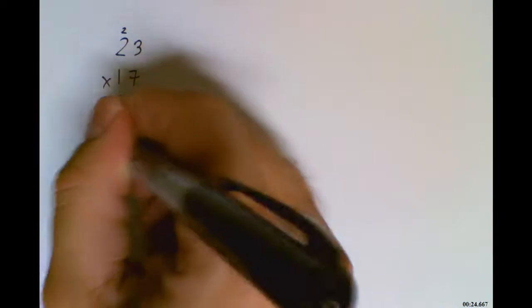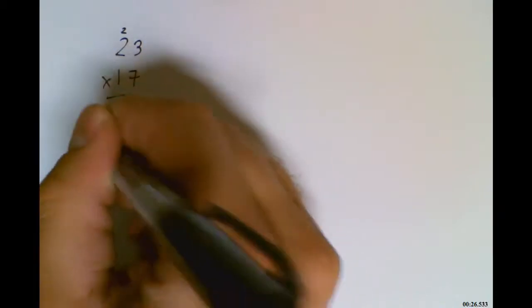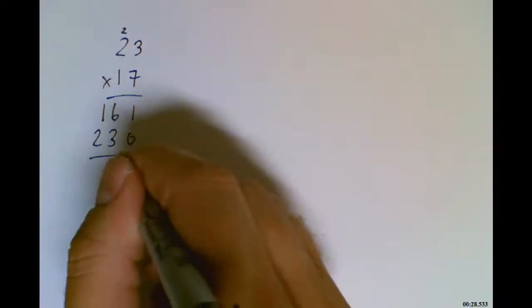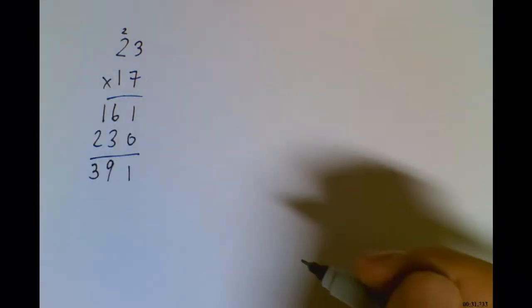We put down a 0. 3 times 1 is 3. 2 times 1 is 2. Add the numbers together. We get 391.